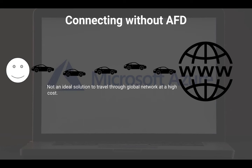The request routes through the local internet service provider all the way from India to the US. It's a long hop — long network routing takes place. If there are any issues with ISPs, be it in India, Europe, or wherever your application is hosted — in this case the US — there is going to be latency. However, users sitting in the US or Seattle region won't face any issues because they're in the same network, the routes are short, and they can reach the website pretty fast. That's not an ideal solution because of those long-running hops and the resulting latency.